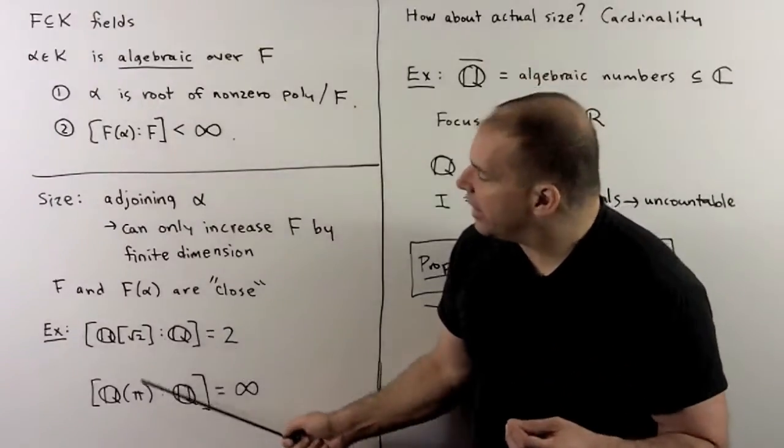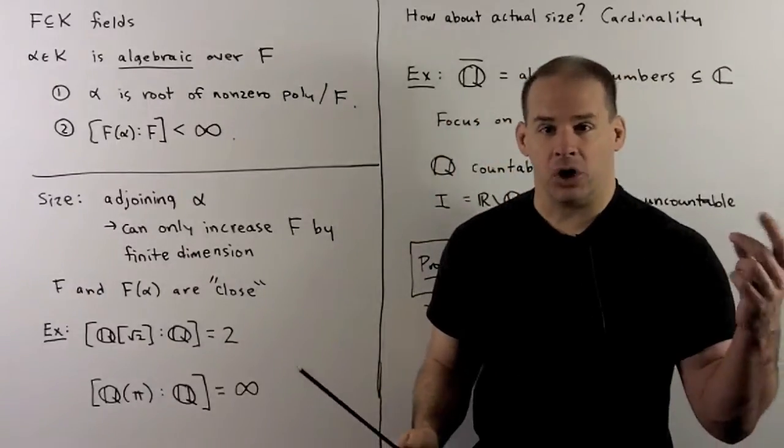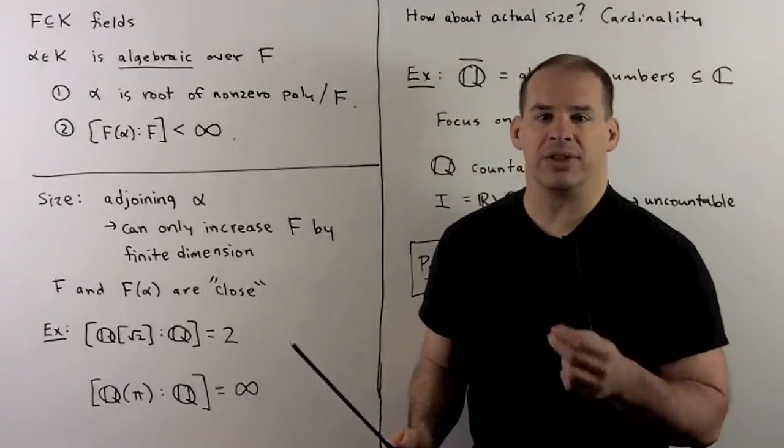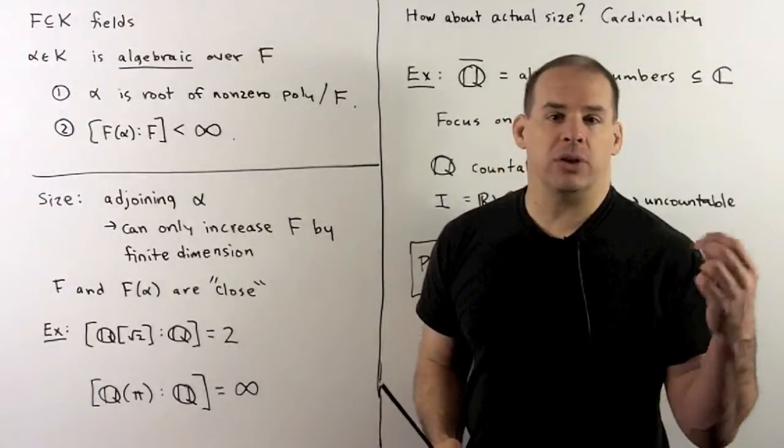So the difference here is when we adjoin a transcendental, we're getting behavior like a function field. We'll say more about this in a little bit. For now, let's return to the notion of size.